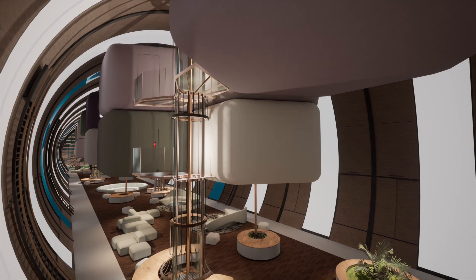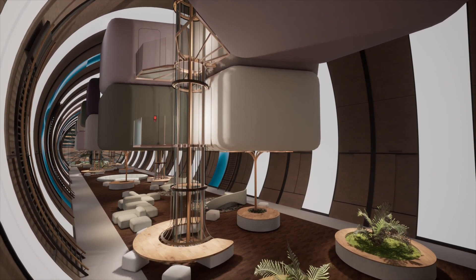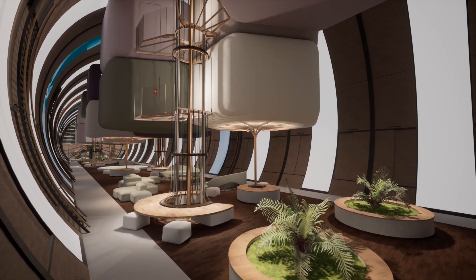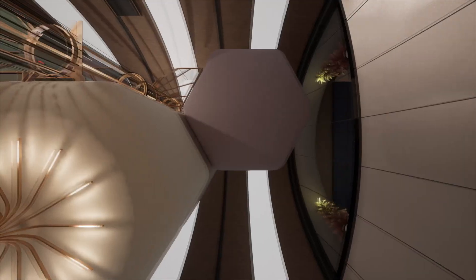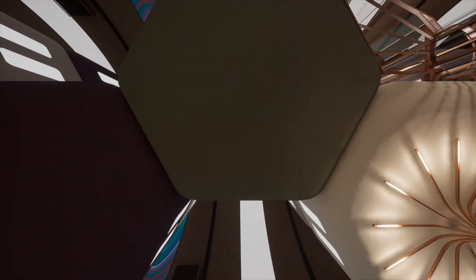If we imagine the living areas on Mars, they will probably be very similar to co-living environments on Earth, where we have small private apartments and then we have larger communal areas to socialize and expand on our day-to-day activities.